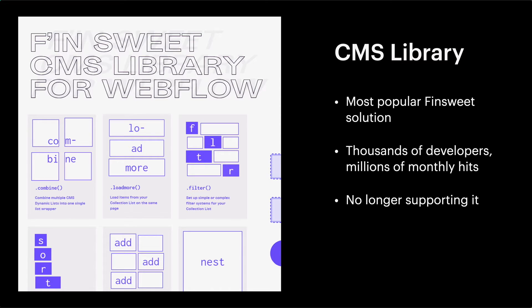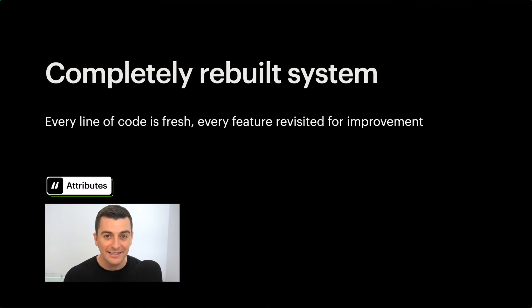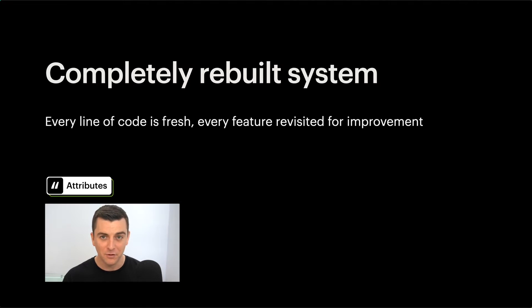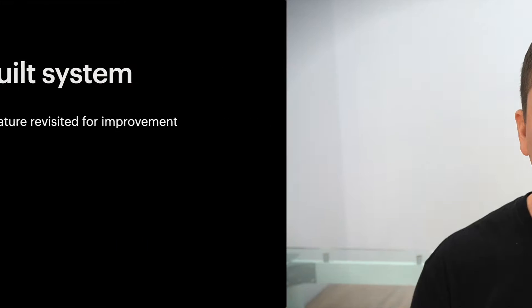CMS library has been our most popular community solution. Today, CMS library helps thousands of developers and serves millions of pages monthly. And we're no longer supporting CMS library because we've created a 2.0 solution. We have completely rebuilt our entire system. Every line of code is fresh, every feature revisited for improvement. And this update is so intense that we can't call it CMS library 2.0. We've heard your feedback and you've motivated us to deliver you a superior solution, and that solution is called Attributes.